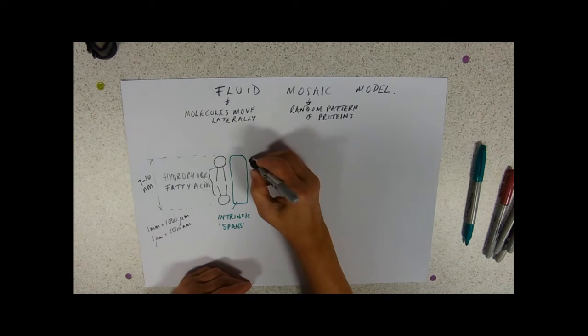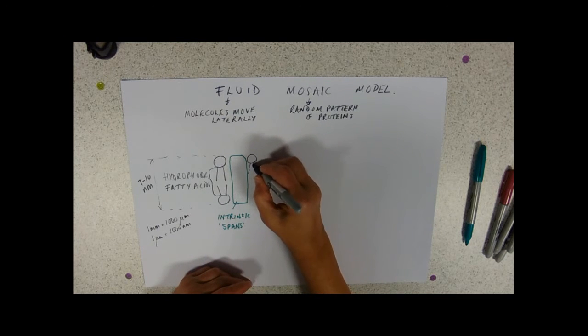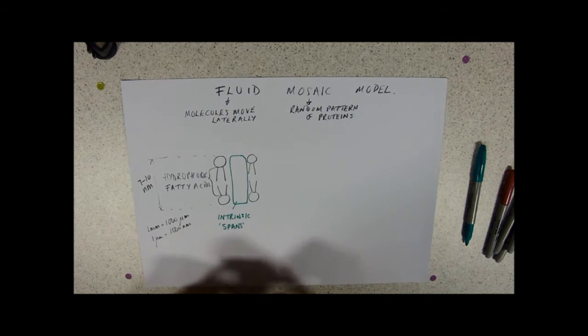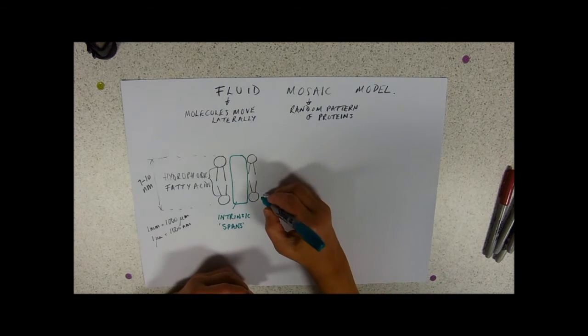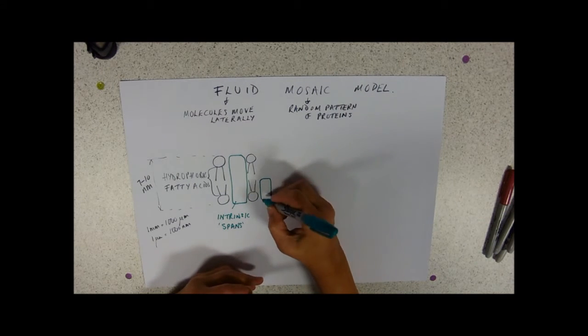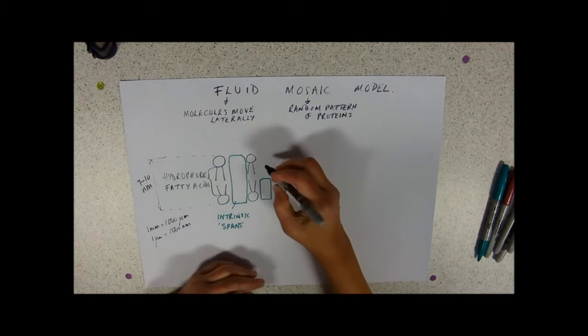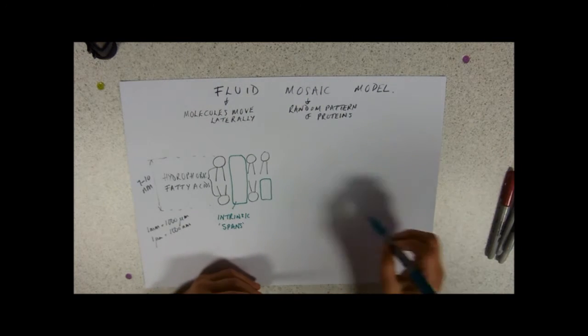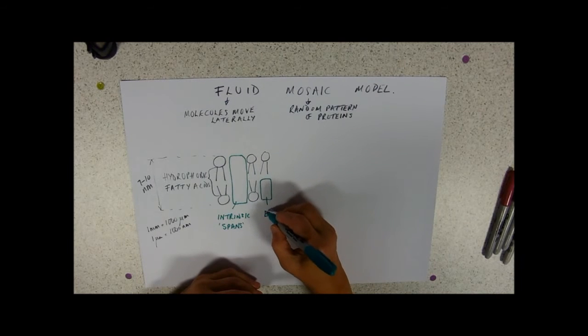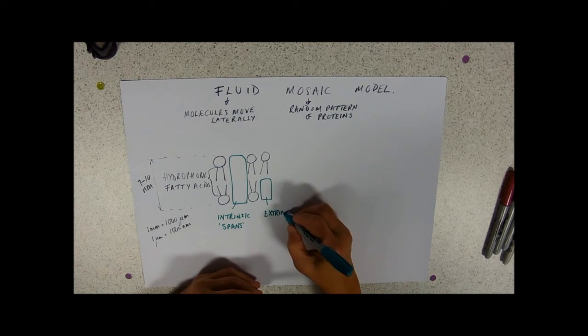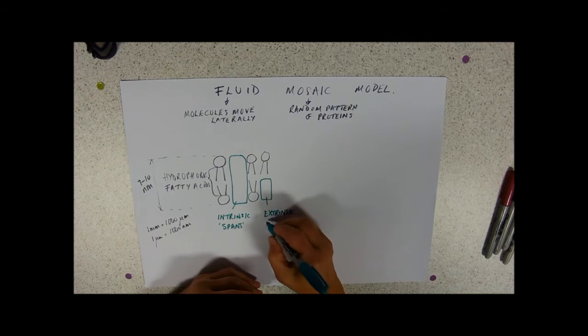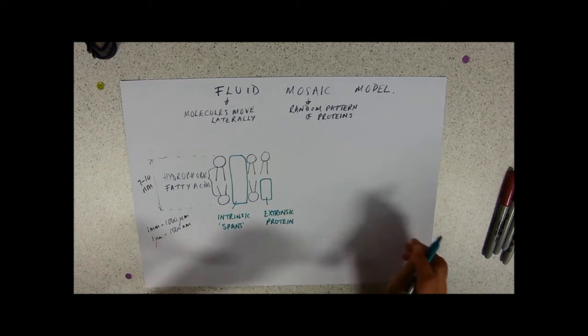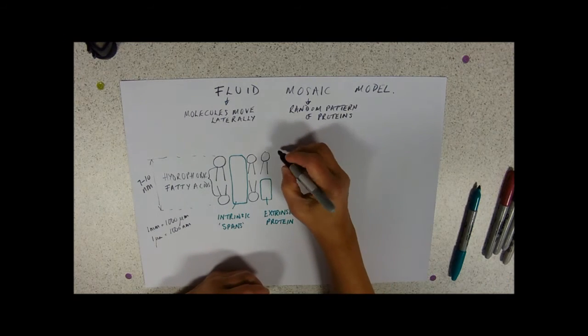The proteins are pretty randomly arranged, and you might get proteins that are just on one side of the membrane, and, of course, it could be on one side of the membrane or the other. And those are called extrinsic proteins. So, those are our two main constituents of the membrane.